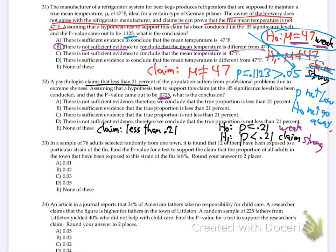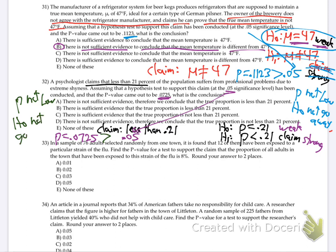The p-value is 0.0725, and the significance level is 0.05. So is the p-value greater or less? Greater. So again, p is not low. H0 does not go away — I'm keeping H0, crossing out H1. There is not sufficient evidence; therefore, we conclude that the true proportion is not less than 21%.